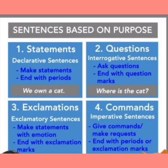Here we will discuss about four types of sentences. Number one: statement, that is declarative sentence — makes a statement and ends with a period. For example, 'We own a cat.' Number two: interrogative sentences — ask questions and end with question marks.